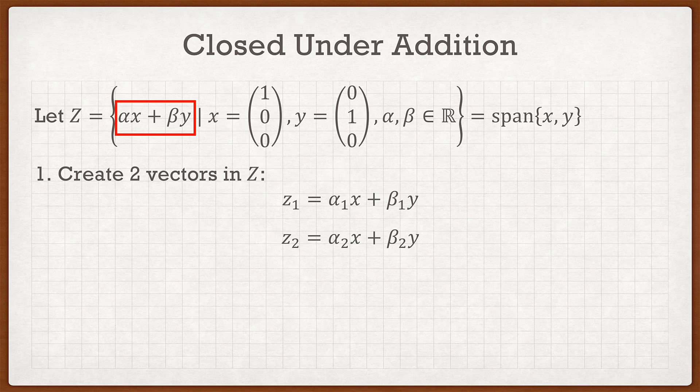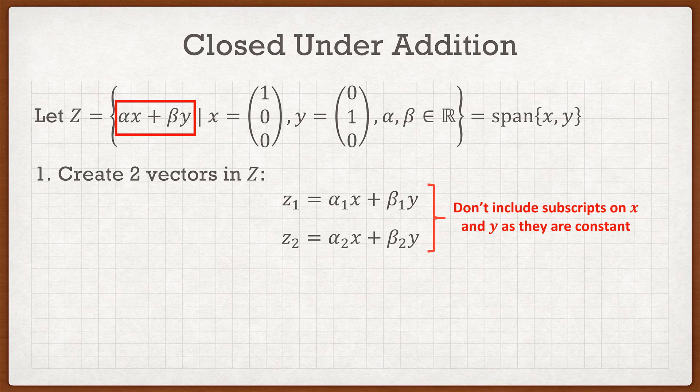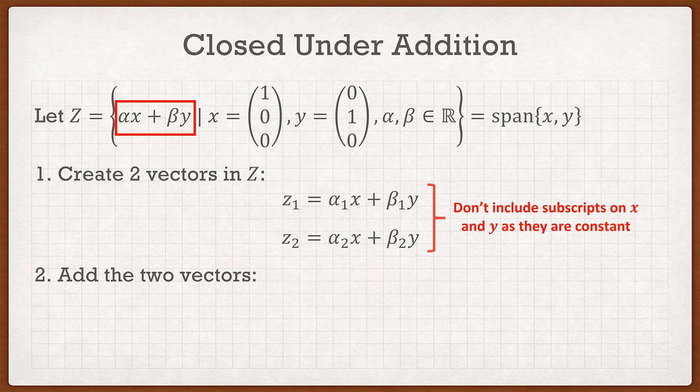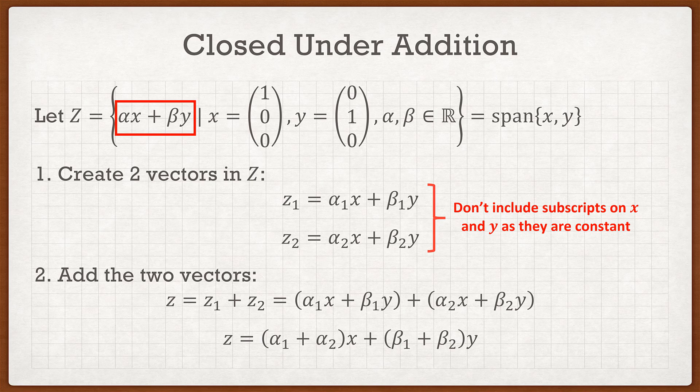And really quick, I didn't include any subscripts on the x and y, so you guys can see I didn't go x₁ and y₁, because if we look at the definitions of x and y they don't change, they're nice and constant. So what I do now is I just simply add the two vectors together. So I can go z which is equal to z₁ plus z₂, and in the end I get this expression if I simplify, where z equals (α₁ + α₂)x + (β₁ + β₂)y. And this is nice because this equation takes basically the same form as that equation highlighted in the red box.